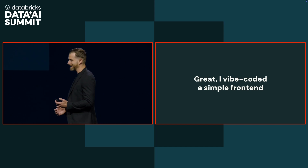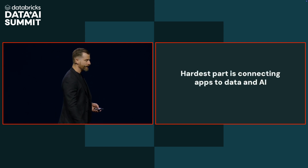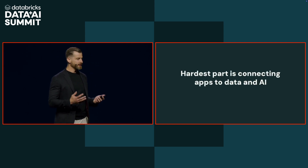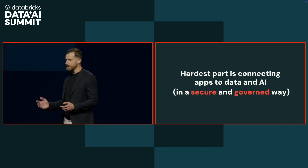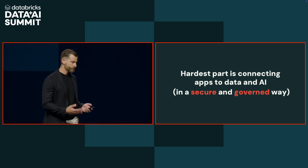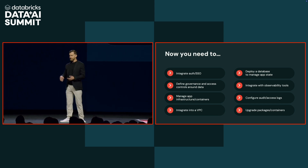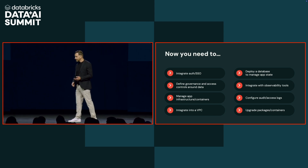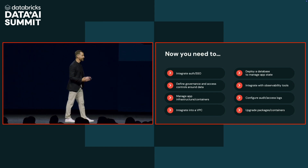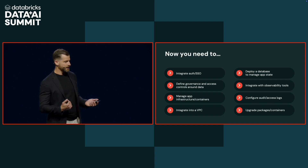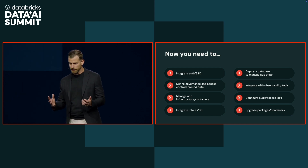Everybody out there has probably done some sort of vibe coding. It's easy to build a front-end application now — I can just vibe code up my app and deploy it. But the hardest part is actually connecting these apps to the data and AI in a secure and governed way. Productionalizing these applications next to your data and AI is really challenging. You have to integrate with your auth and SSO, define governance and access controls, manage the infrastructure containers, integrate into your VPC, deploy a database to manage state or connect operational data, integrate with observability tools, configure an access log. Everything that goes into productionalizing is the really, really difficult part.